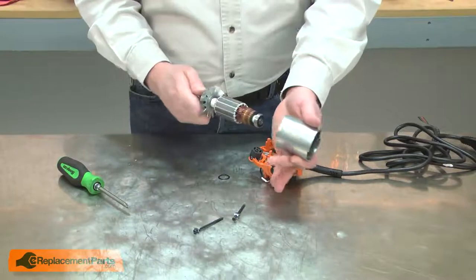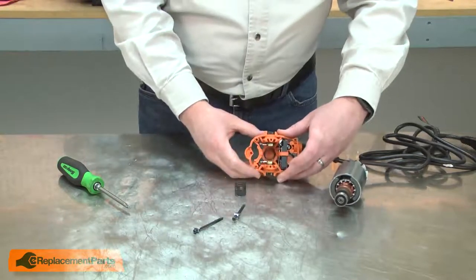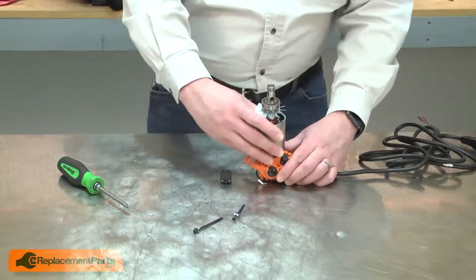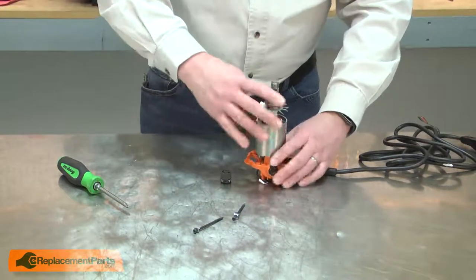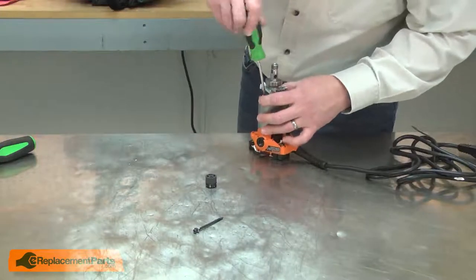I'll place the armature through the field, install the wavy washer, and now I can reinstall the lower housing.